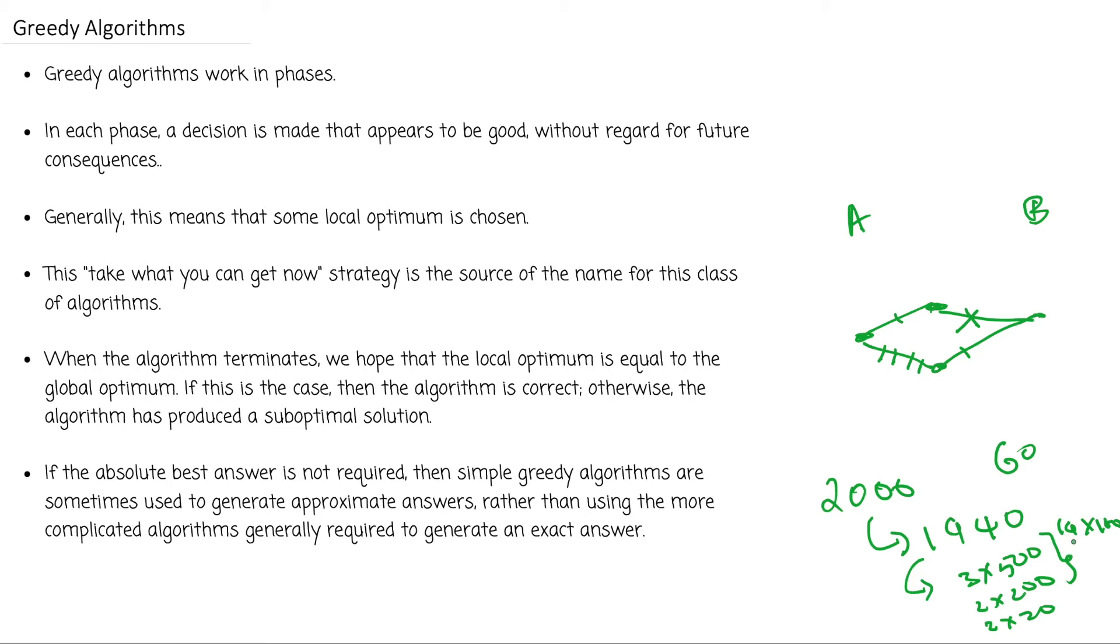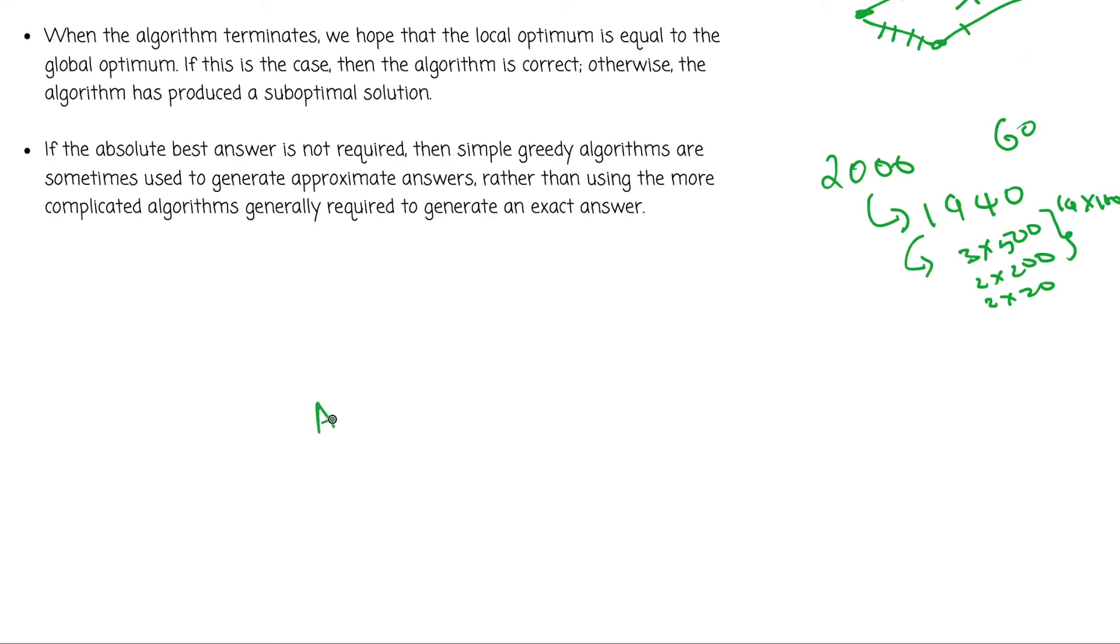One algorithm that we have already seen is the Dijkstra shortest path algorithm. Imagine that you have several vertices in a graph—let's say A, B, C, D, E, F—these are the connections, and these are the edge costs.